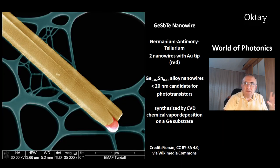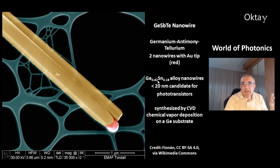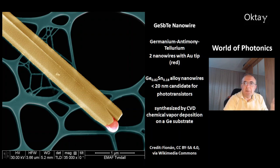This is a nanowire of germanium antimony tellurium. You can see two nanowires — one has a gold tip, shown in red — and there is an alloy with composition germanium 82% and tin 18%. Nanowires of this alloy are candidates for phototransistors with a size of less than 20 nanometers, and they can be synthesized by CVD, that's chemical vapor deposition, on a germanium substrate.